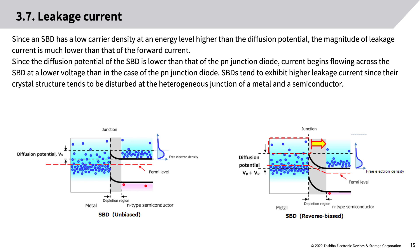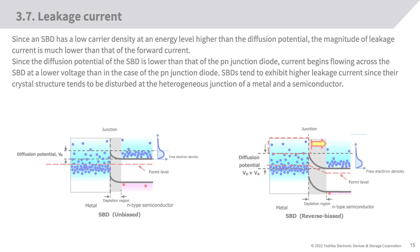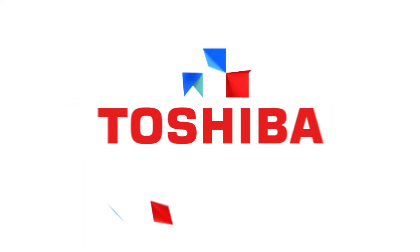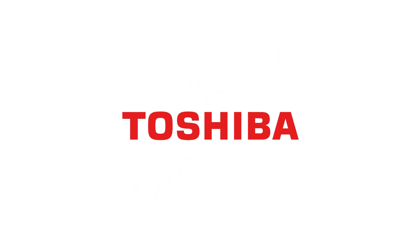Since an SBD has a low carrier density at energy levels higher than the diffusion potential, leakage current magnitude is much lower than forward current. Since the diffusion potential of an SBD is lower than that of a PN junction diode, current begins flowing at a lower voltage. SBDs tend to exhibit higher leakage current since their crystal structure tends to be disturbed at the heterogeneous junction of metal and semiconductor.